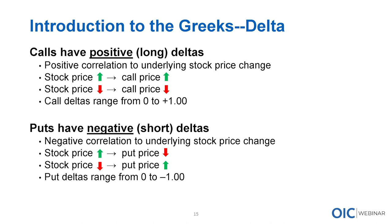When we're talking about puts - puts have negative or short deltas. There's a negative correlation to the underlying stock price change - this reasons to make sense. If you buy a put, you're buying it with the expectation that the stock price is going to fall and therefore you're going to make money on that put. When the stock price goes up, you can expect to lose money on that put; when the stock price goes down, you can expect to make money on the put. Put deltas range from zero to negative 100. Your put delta will get more negative and your value will increase as the stock falls.